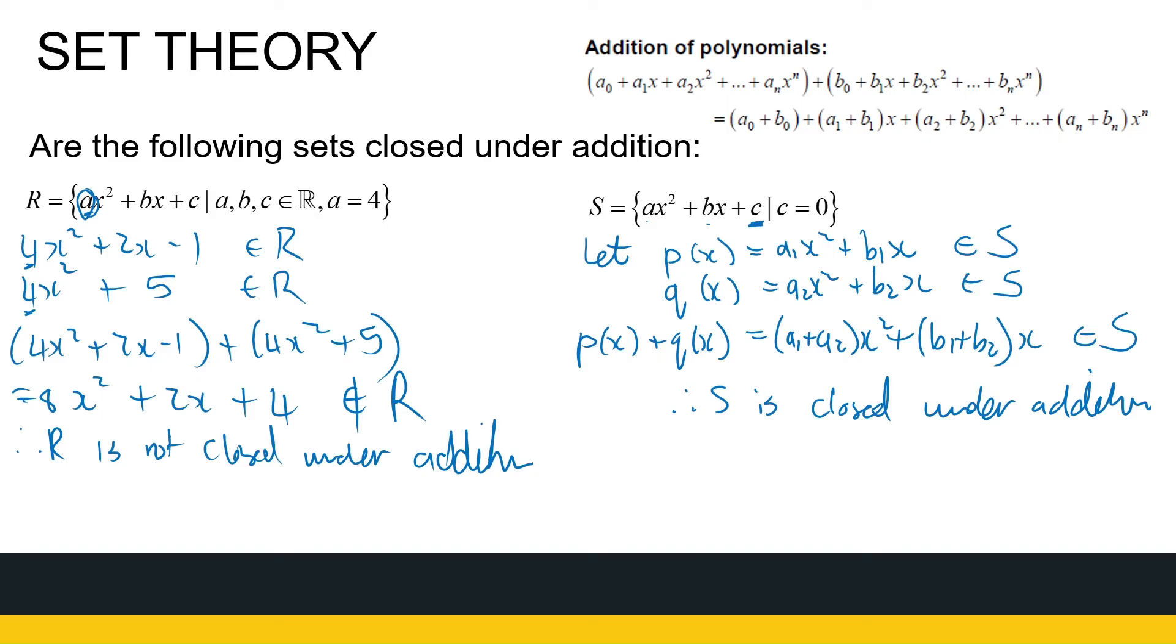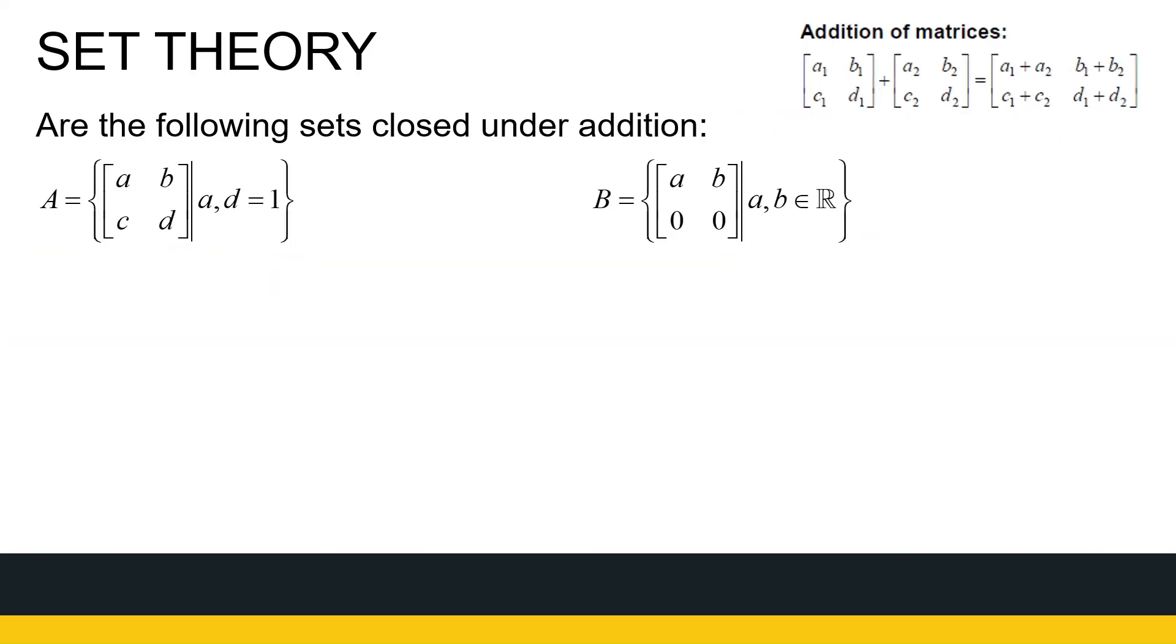So lastly, let's just look at some matrices. Here's two sets of matrices, A and B. A, I've got the case where those two entries are equal to 1. So for example, [1, 4; 0, 1], [1, 3; -1, 1]. Those are both in A.